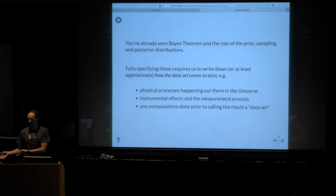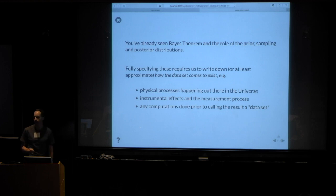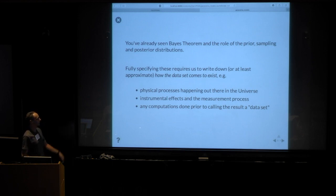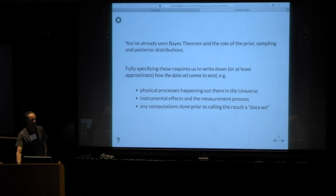Hearkening back to tall Adam's introduction yesterday: data are constants. If we take the constants from the telescope and do something fully deterministic to them with no uncertainty, I'm still OK calling that data. But at some level they are models, so our capital M model has to account for the physical processes out there, the instrumental effects, the measurement process itself, and any calculations we did to the raw numbers before calling them a dataset. This is the ideal case; in practice most of what we do is taking shortcuts to this.